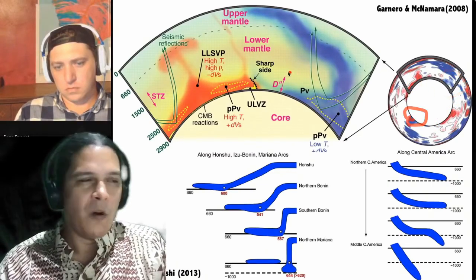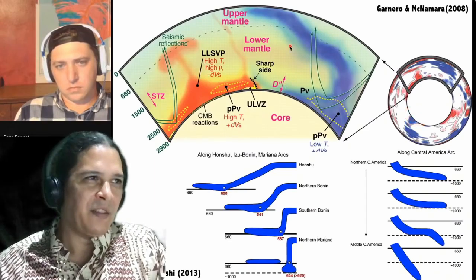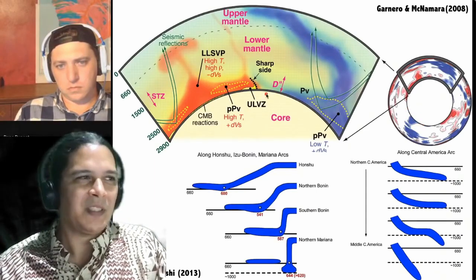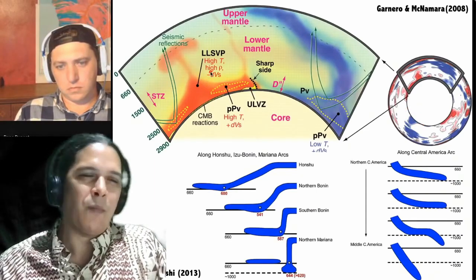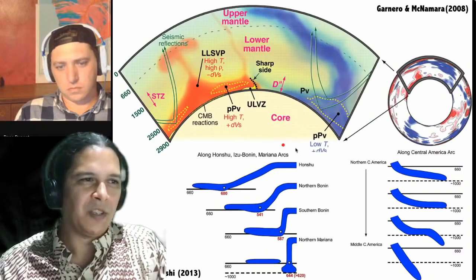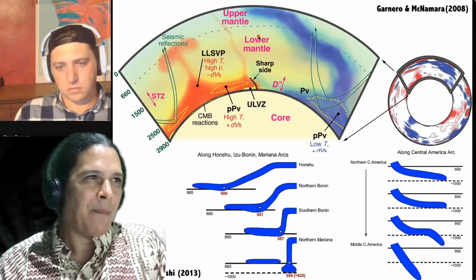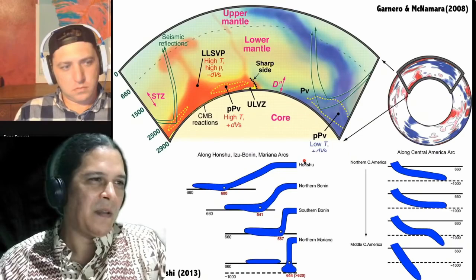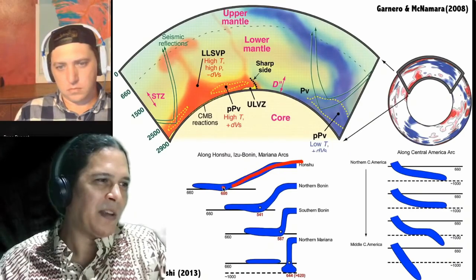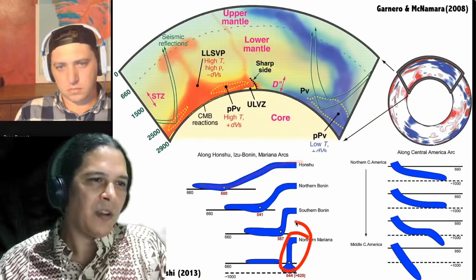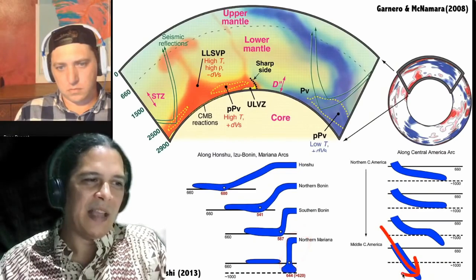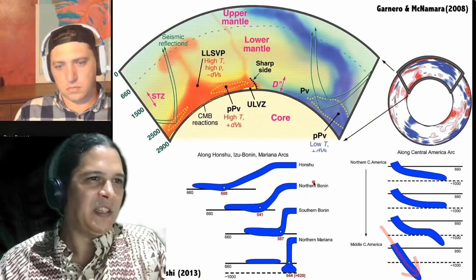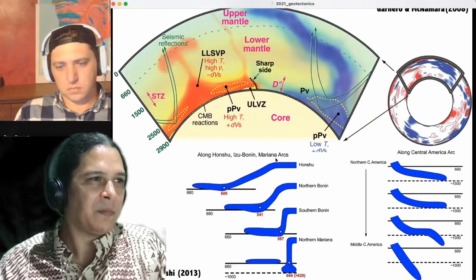The whole map shows two spots that are big upwellings and two spots between them that are big downwellings — that's the structure of the core-mantle boundary at present. Through this kind of study we've mapped ocean plates going down, sometimes flattening out, sometimes breaking apart, and sometimes penetrating and sinking further — all kinds of unexpected behavior.